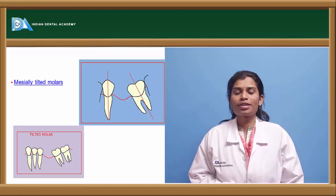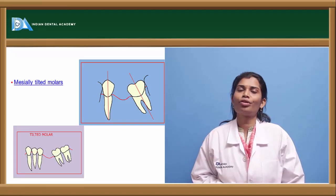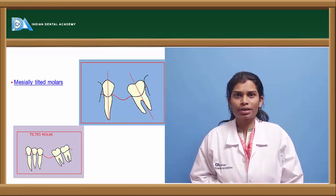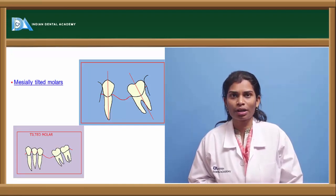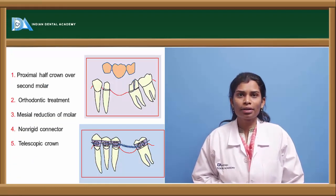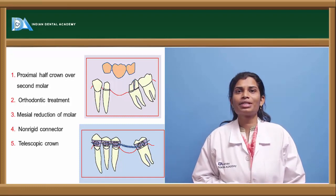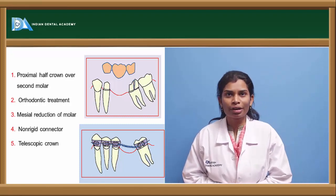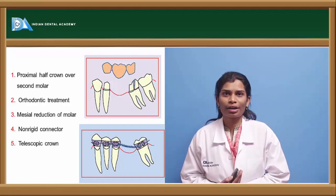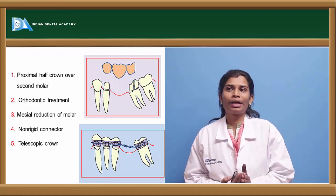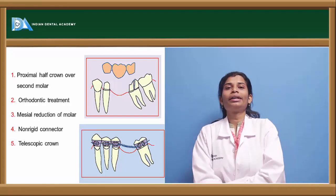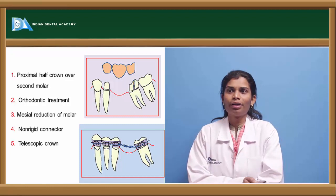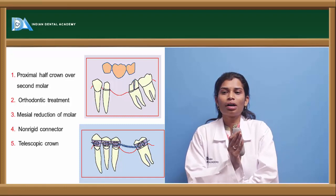Mesially tilted molars are a common occurrence since the first molar is the first permanent tooth to erupt and the first to be lost, leading to mesial drifting of the second molar. This can be managed by using a proximal half crown (mesial half crown) covering only the mesial surface, or by orthodontic tooth movement to upright the molar. It can also be managed by slight mesial reduction with osteoplasty, a non-rigid connector for stress-breaking, or a telescopic crown where a crown is first cemented onto the tilted molar and the final FPD is cemented over it.